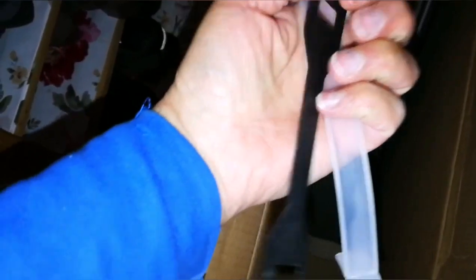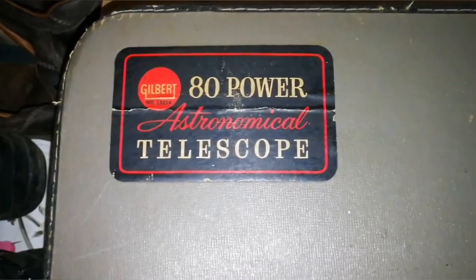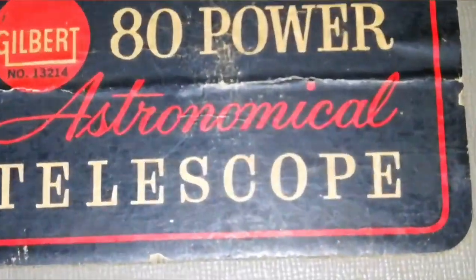What is this? Okay, let's put it here. Oh, 80 Power Astronomical Telescope. That's a Gilbert Telescope, the very model that I had when I was a kid.